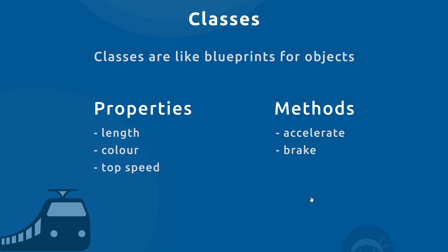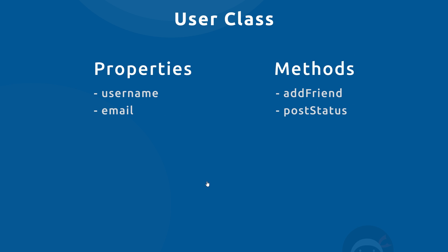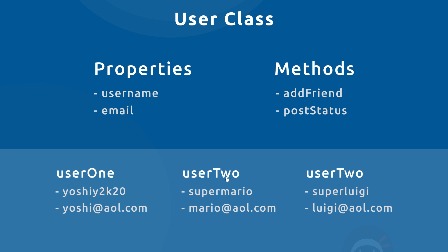In programming we might have something like a User instead. The properties of that user could be a username and an email, so all users would have those two properties. The methods could be something like add friend — to add a new friend — or post status, like on Facebook when you post a status. These are the methods, and together with the properties they describe the user: how they should look and behave. Every user created using this class could have different values for username and email, but they would all have those properties.